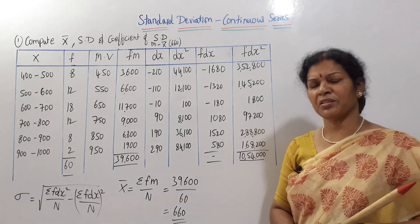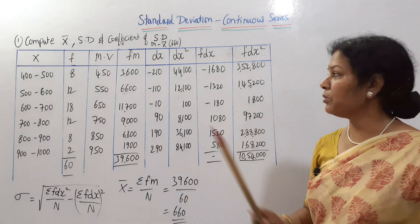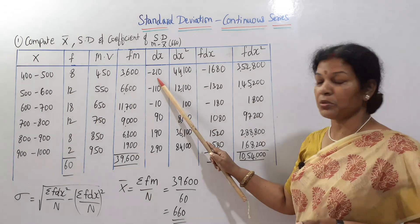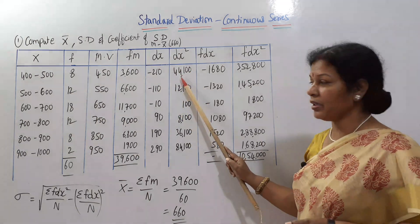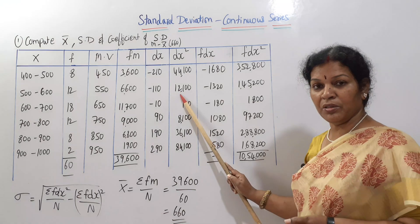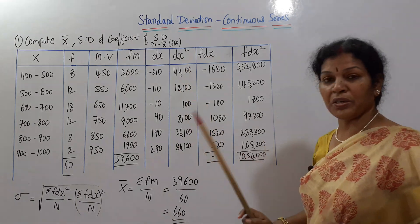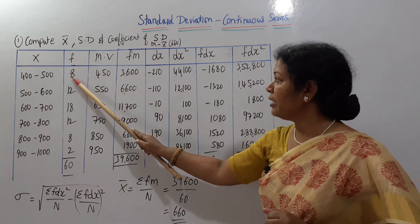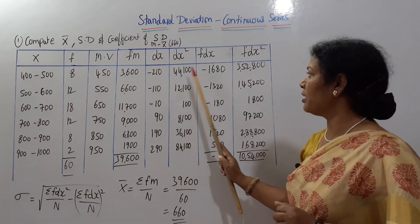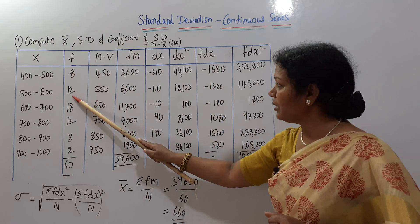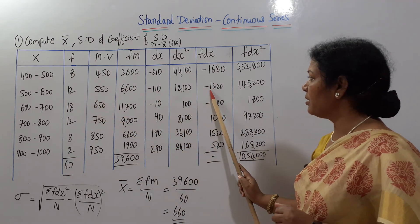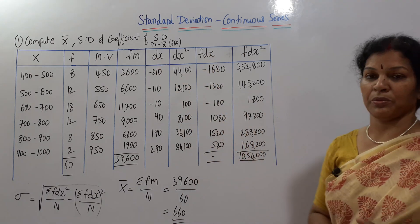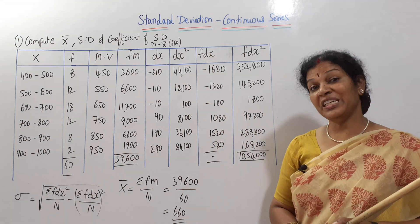Next, DX squared: (−210)² = 44,100 and (−110)² = 12,100. Then frequency into DX: 8 × (−210) = −1,680 and 12 × (−110) = −1,320.